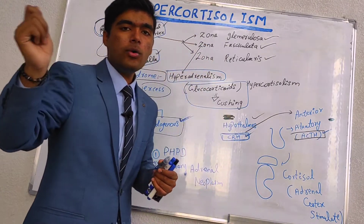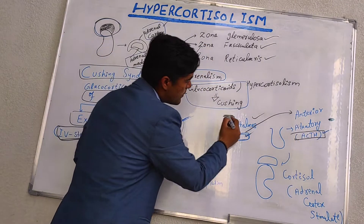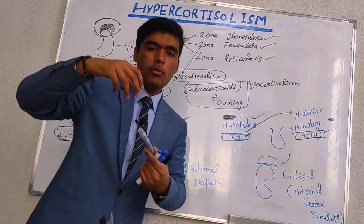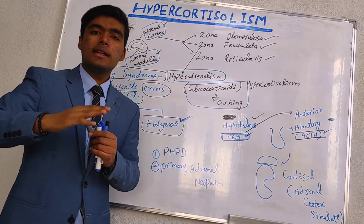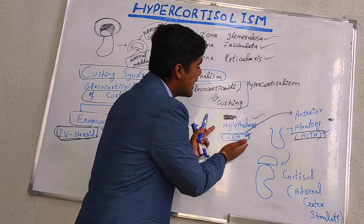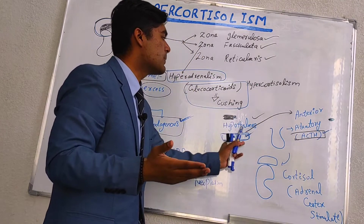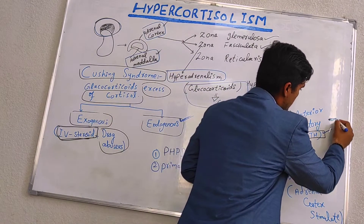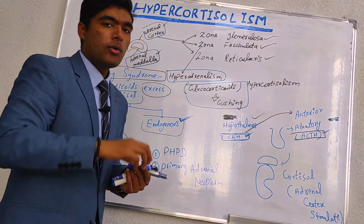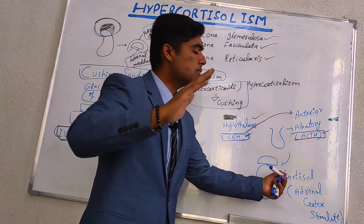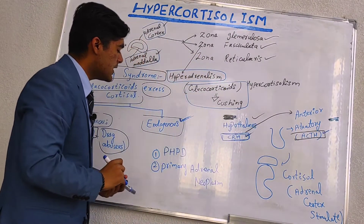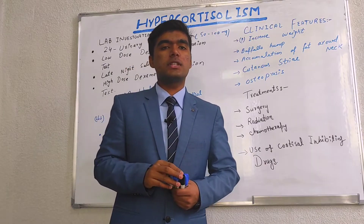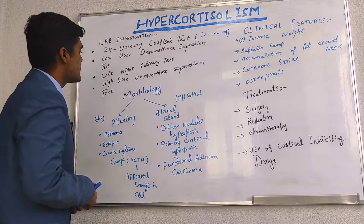If a tumor develops on the hypothalamus, this leads to hyperplasia and increased secretion. Similarly, if there is a tumor on the anterior pituitary, it leads to an adenoma and further increases cortisol secretion. We also have primary adrenal neoplasia as another cause. These are the main pathological sources involved in detecting hypercortisolism and Cushing syndrome.